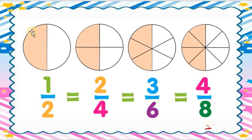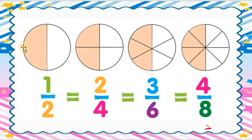Let me repeat the key formula. In any shape, first check how many total parts there are — write that in the denominator. Then check how many parts are shaded — write that in the numerator. Total parts go in the denominator, shaded parts go in the numerator. That is our formula.